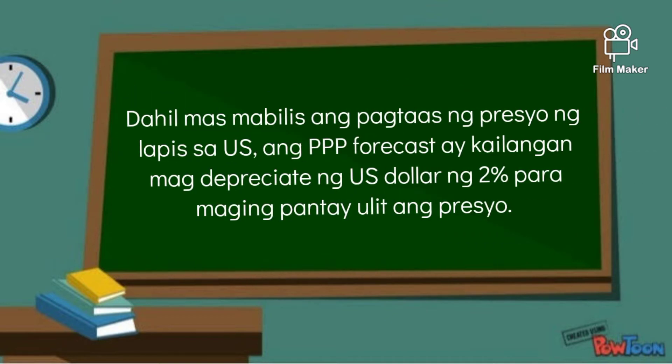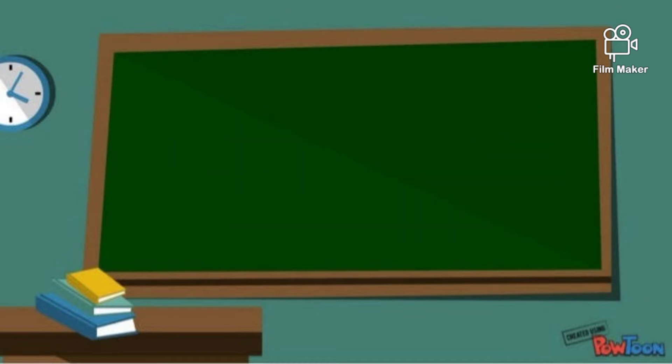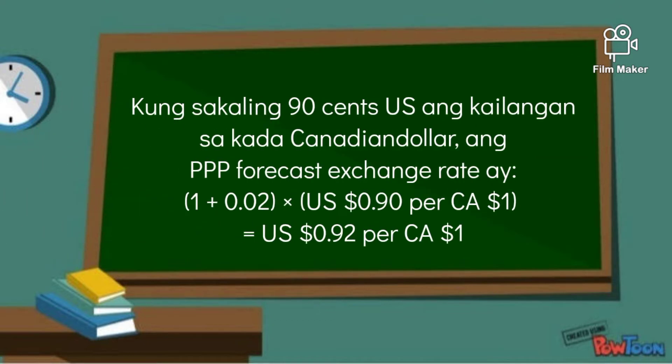Dahil mas mabilis ang pagtaas ng presyo ng lapis sa UF, ang PPP forecast ay kailangan mag-depreciate ng UF ng 2% para mag-impantay ulit ang presyo. Kung sakaling 90 cents US ang kailangan sa kada Canadian dollar, ang PPP forecast exchange rate ay 1 plus 2% times US dollars of 90 cents per Canadian dollar is equal to 92 cents US dollar per Canadian dollar.